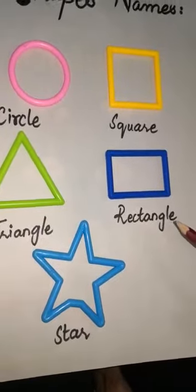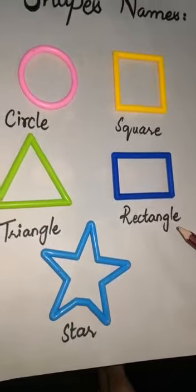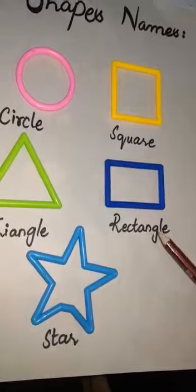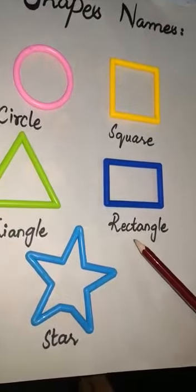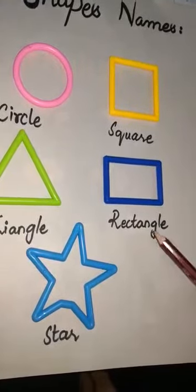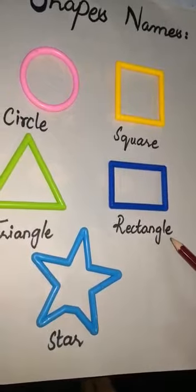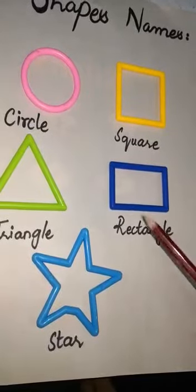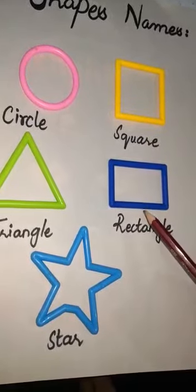This is a rectangle. R E C T A N G L E. Rectangle. It has four sides.